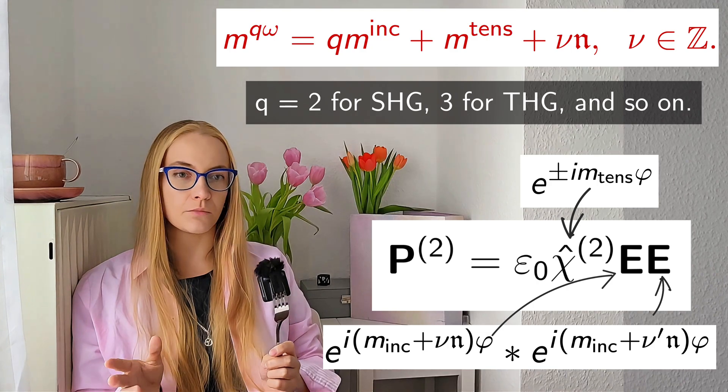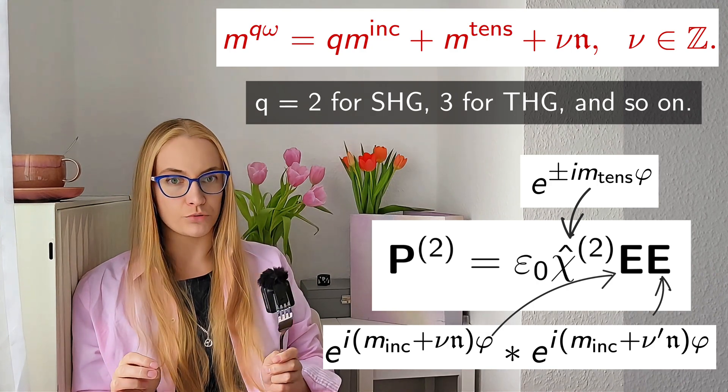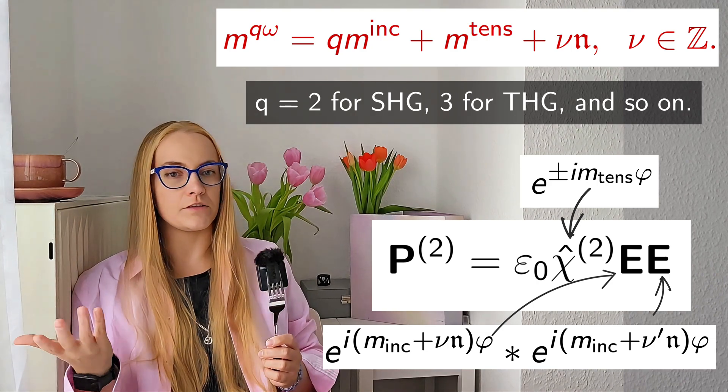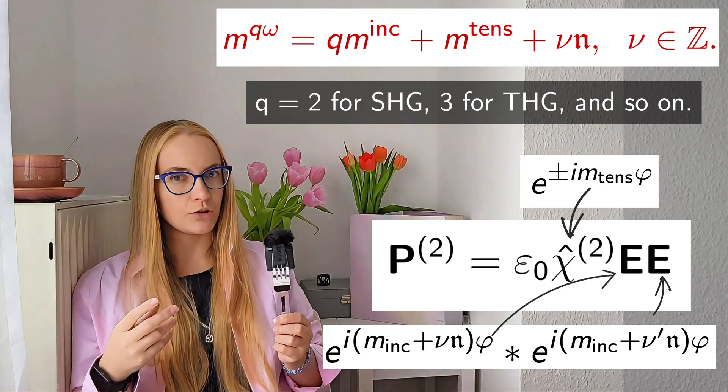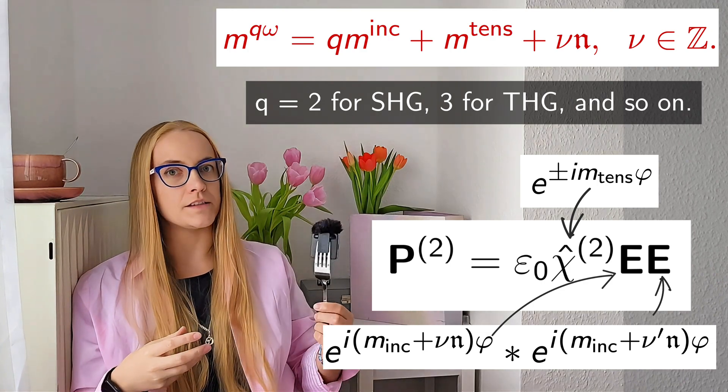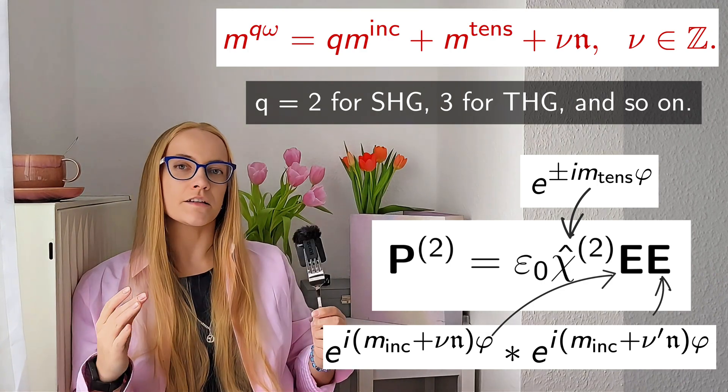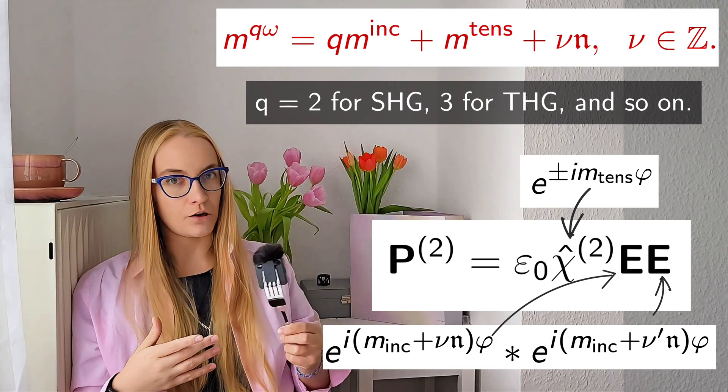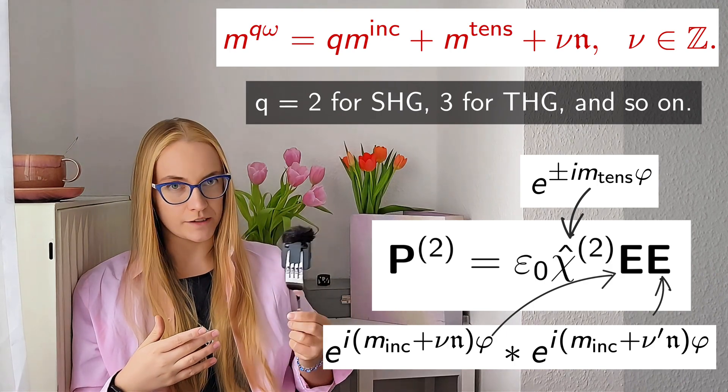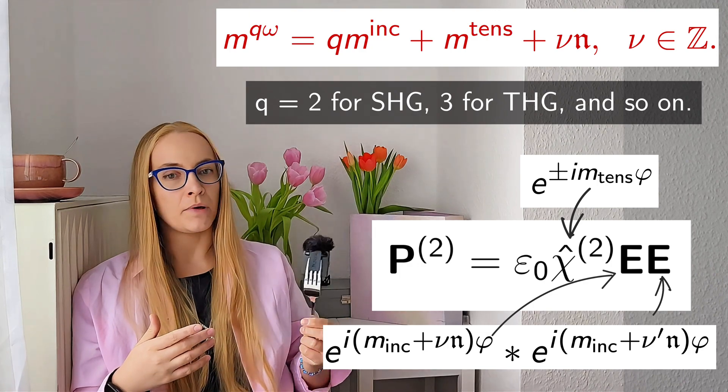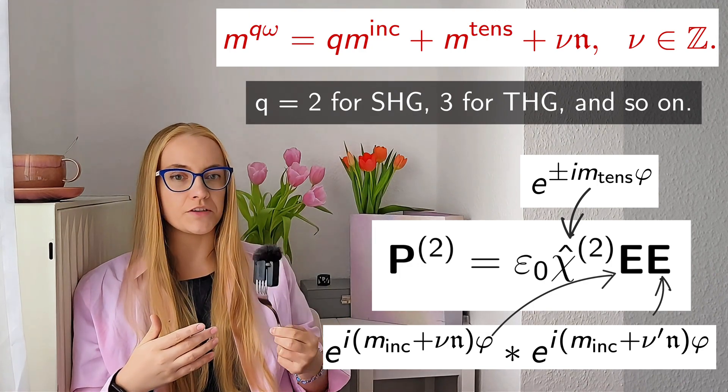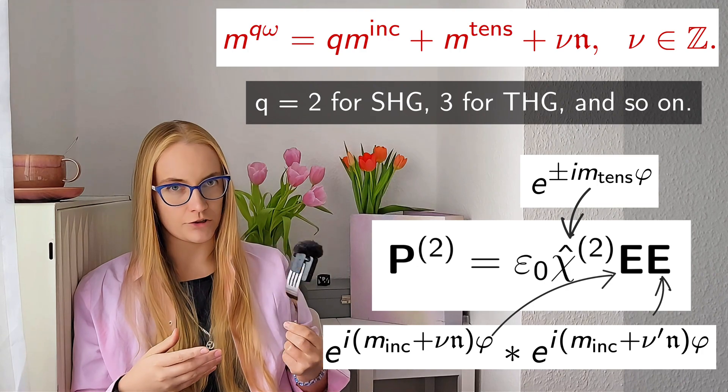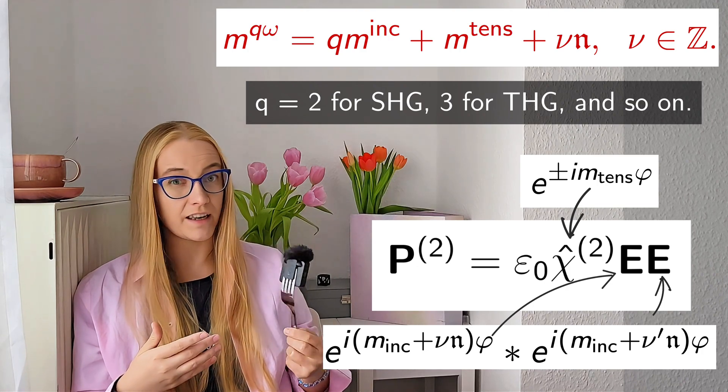After that all possible total angular momentum projections for the second harmonic can be written as follows. You may say, oh, but it is just the polarization, you should then take into account that these polarization currents excite eigenmodes on the second harmonic frequency, so the symmetry of the nanostructure itself plays roles again. But then the multiples of n from the nanostructure symmetry should be admixed again, but they are already admixed, so the answer doesn't change.